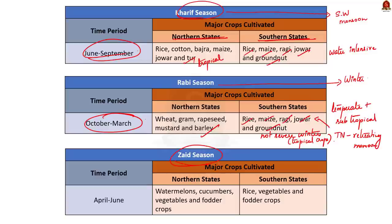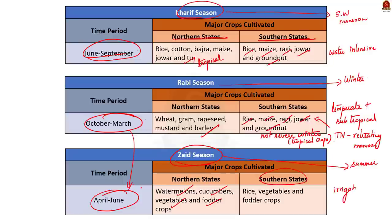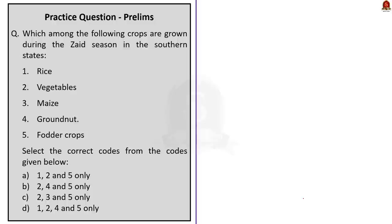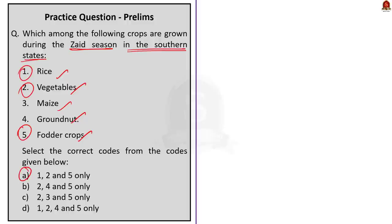The Zaid season is a short-duration summer cropping season starting immediately after Rabi crop harvest, falling between April and June. In northern India: watermelons, cucumbers, vegetables, and fodder crops are grown. In southern India where irrigation is available: rice, vegetables, and fodder crops. The question asks which crops are grown during the Zaid season in southern states — from the discussion it is clear that rice, vegetables, and fodder crops are grown. The correct answer is option A — 1, 2 and 5 only.